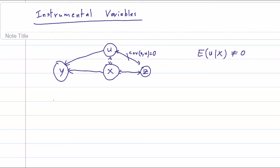So mathematically, we would say that an instrument, so the instrument is called z, it satisfies two conditions. We need some covariance between x and z. And we need the covariance between u and z to be zero. Sorry, here, of course, it's different from zero.